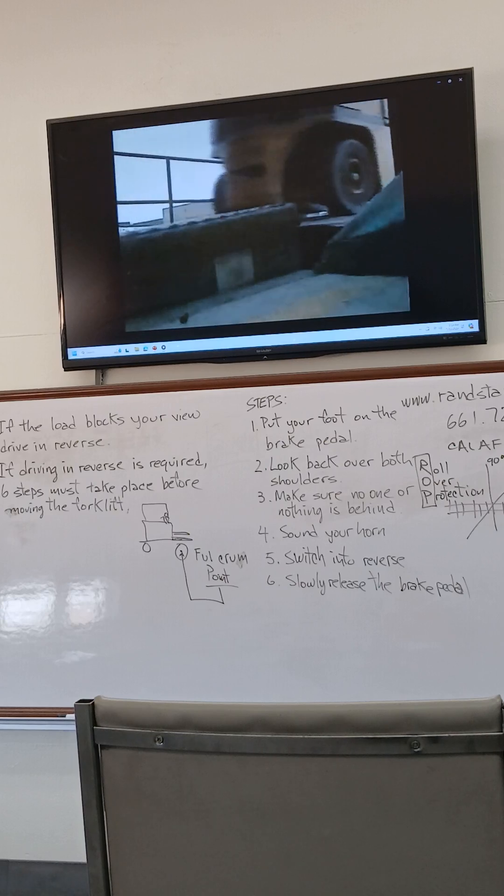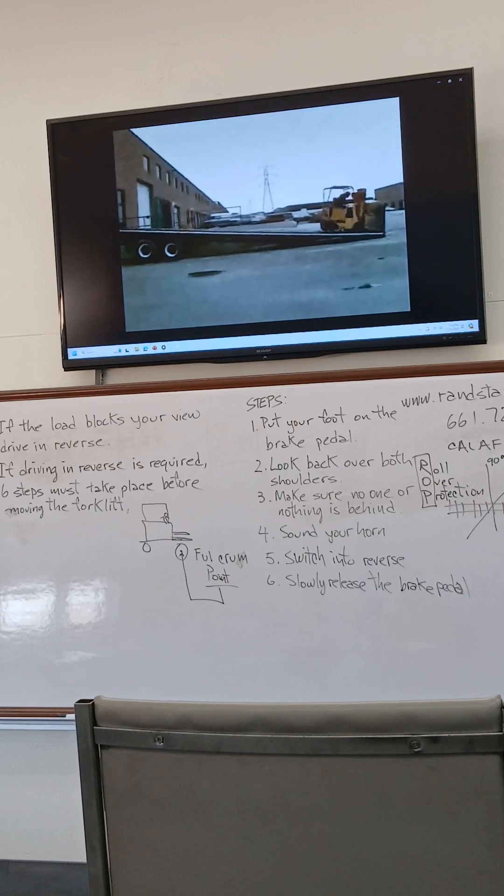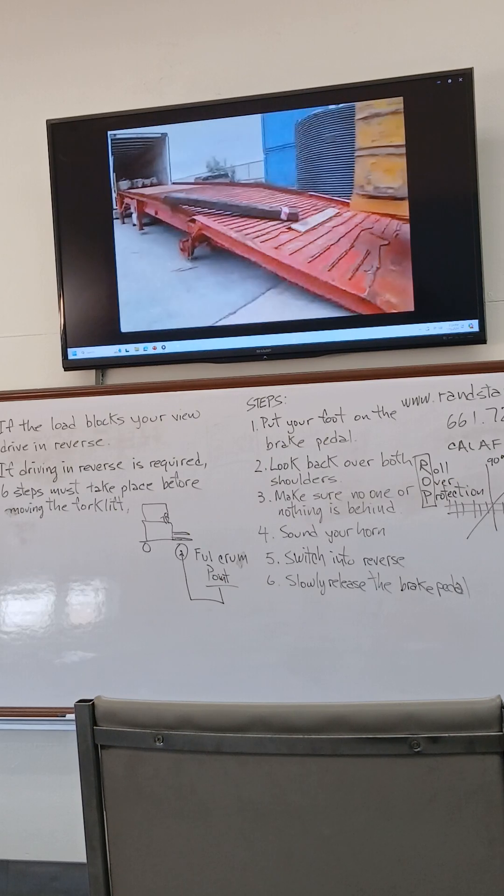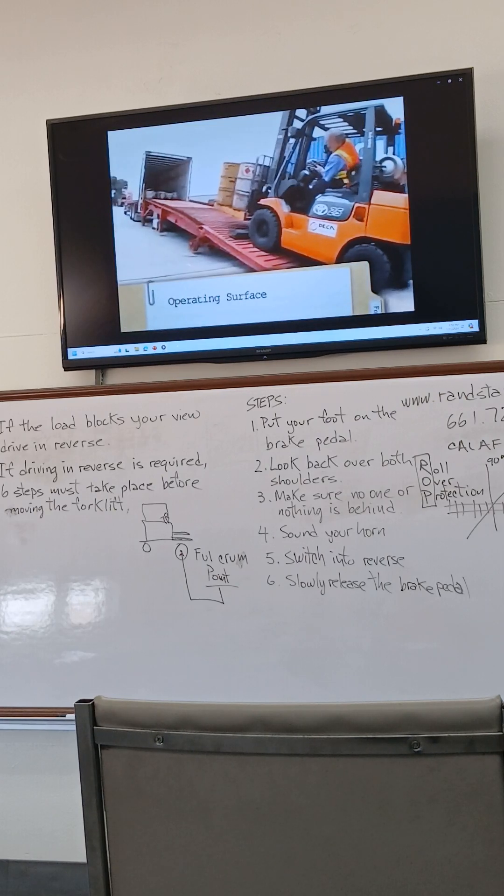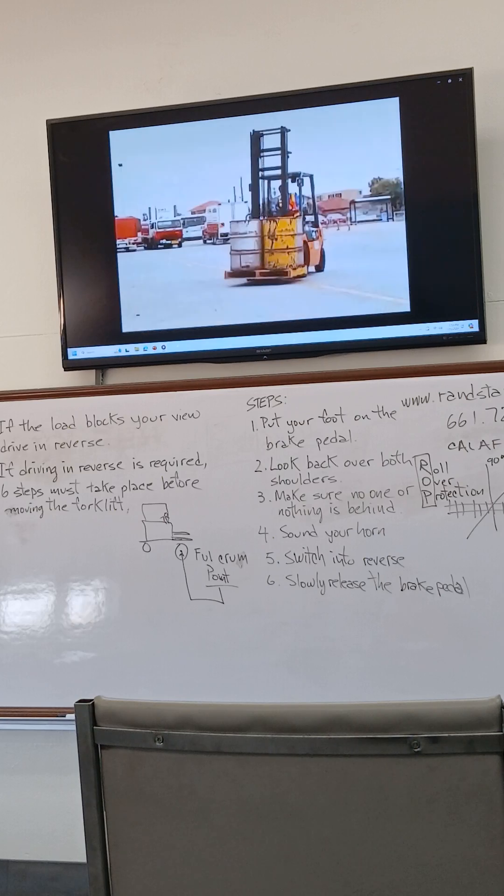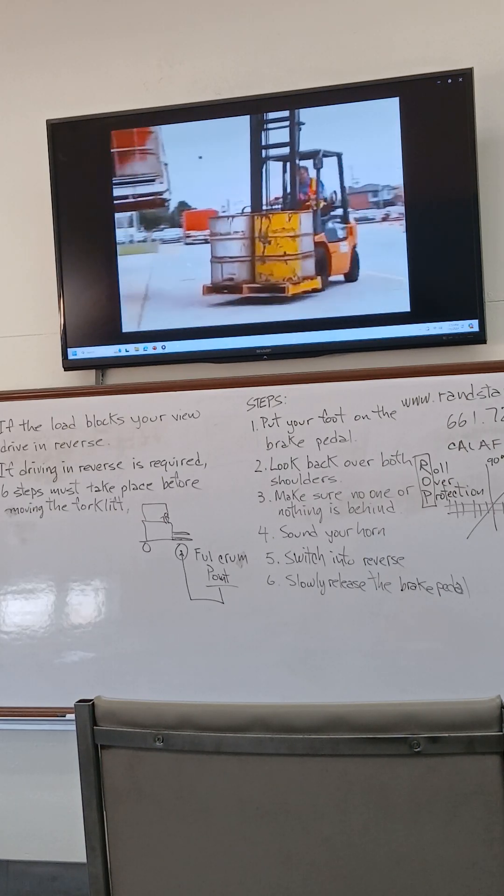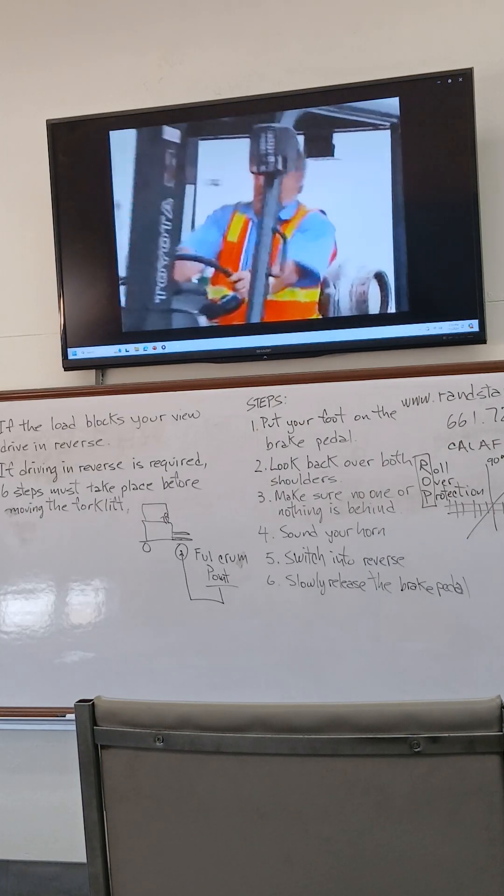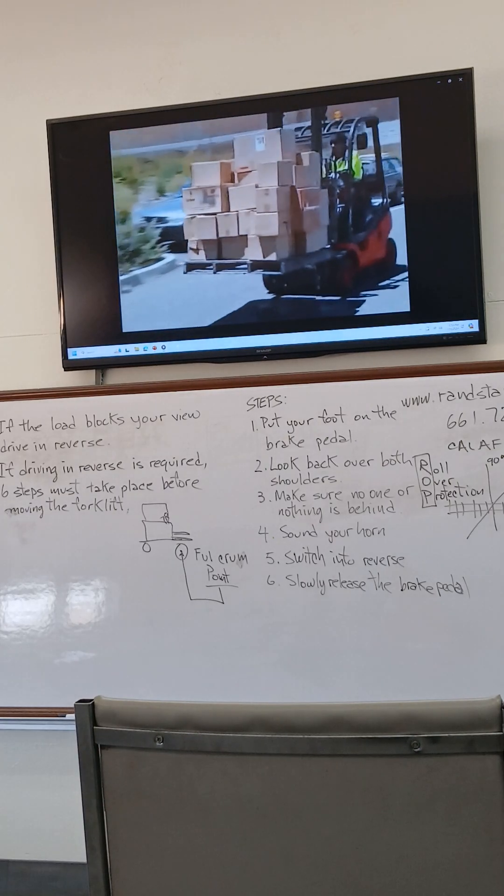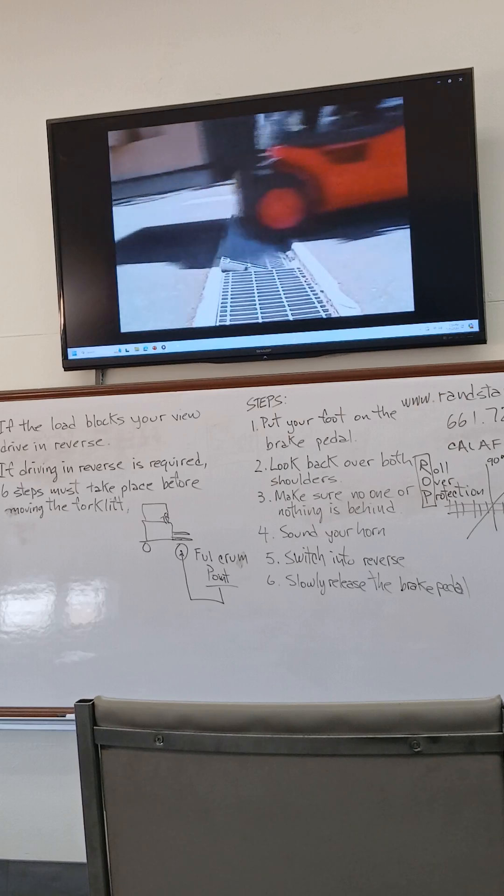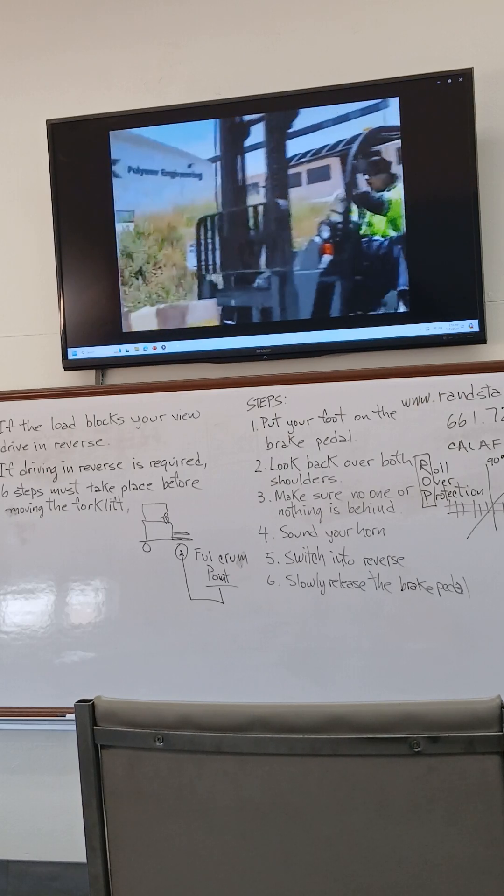Whenever you undertake a task, you need to be assessing the specific operating environment. The surface a forklift operates on can cause serious safety problems. Loose objects, bumps, or depressions can cause you to lose control of steering, bring you to a sudden unplanned stop, or cause you to drop your load.